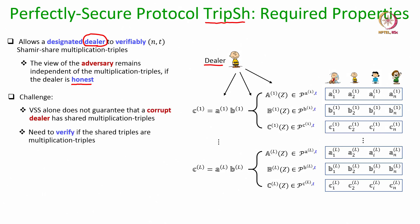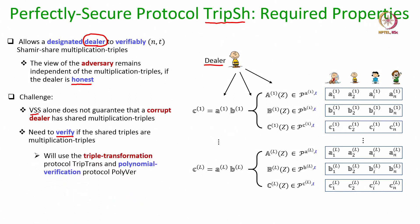That is the challenge in this triple secret sharing protocol, because just using the polynomial-based verifiable secret sharing is not sufficient here. Using polynomial-based VSS it will be guaranteed that the dealer has secret shared triplets of values using t-degree polynomials, but it may not have secret shared multiplication triplets.